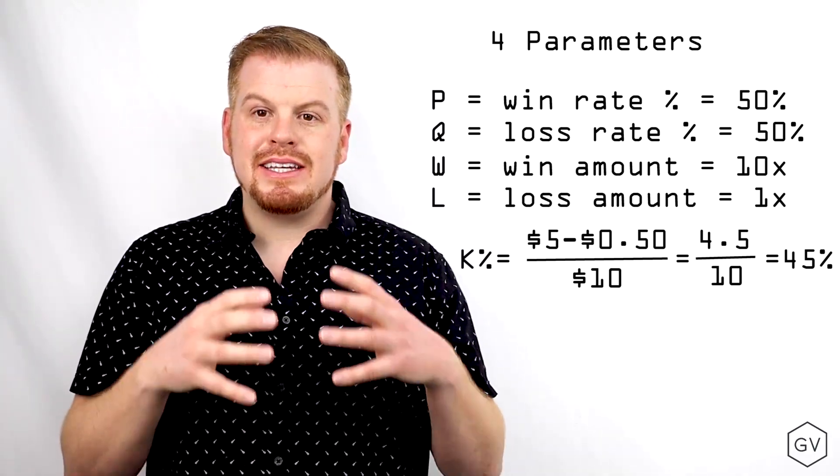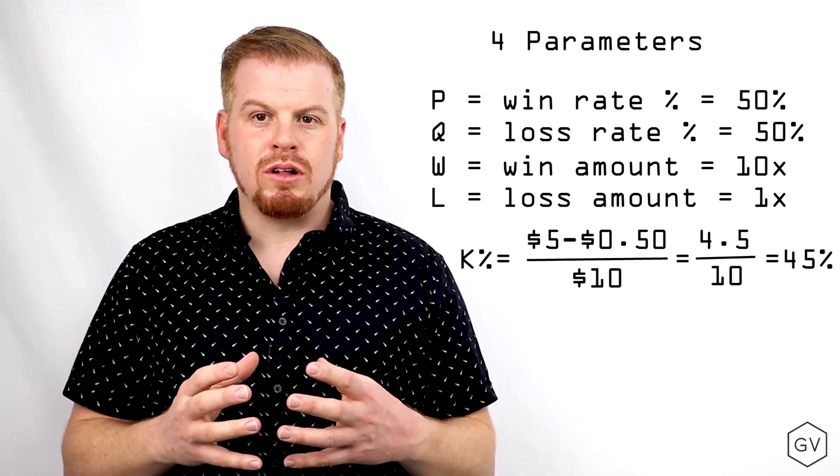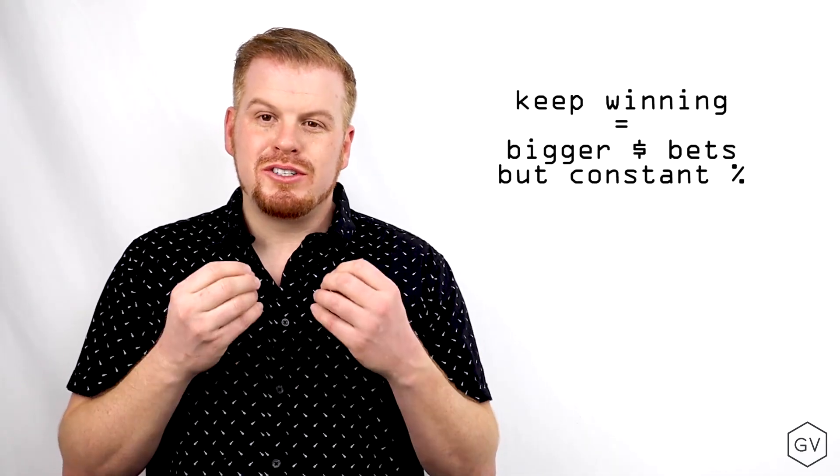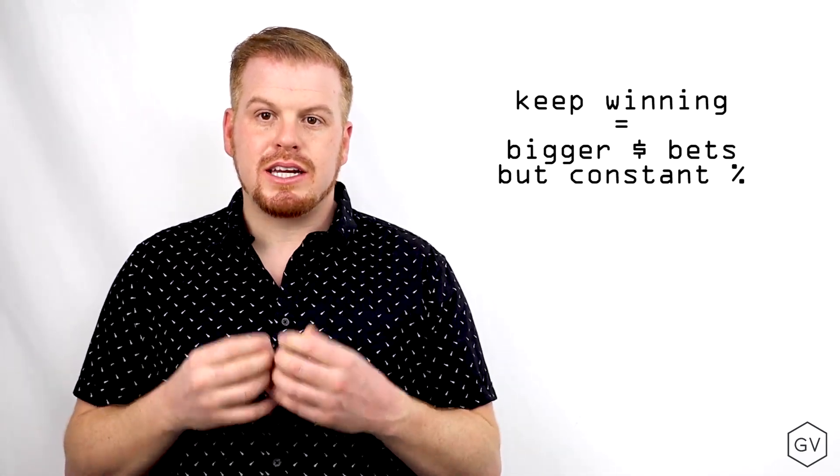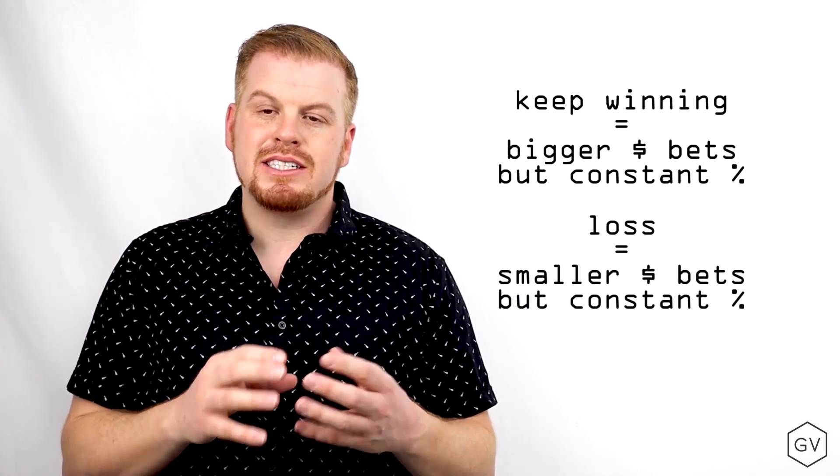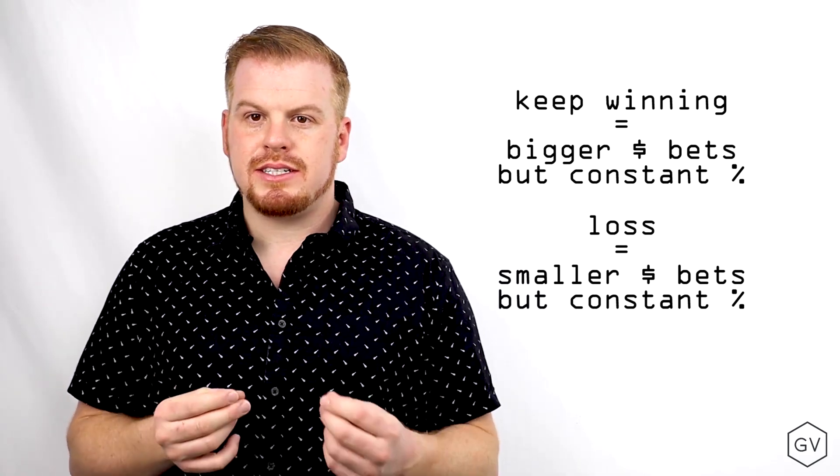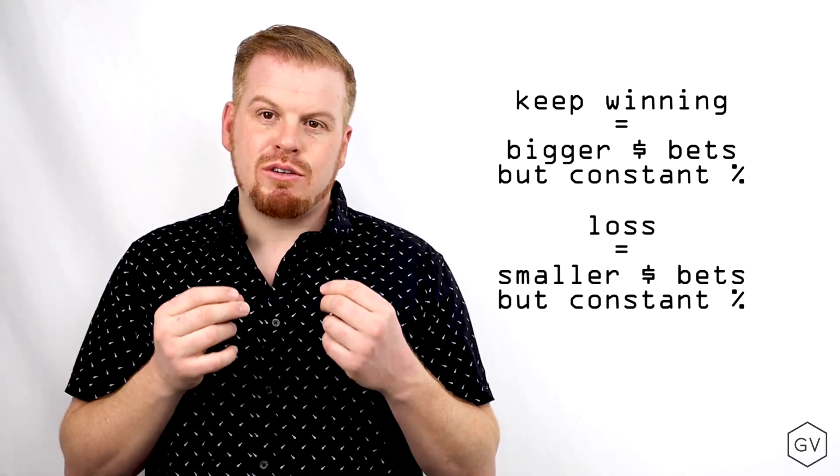And now we can see that the optimum bet size is 45% of your bankroll for each play. So if you win, your dollar size for the next bet is going to be bigger. And if you lose, your dollar size for the next bet is going to be smaller, but the percentage of the bankroll is going to be consistent. It will always be the Kelly criterion.